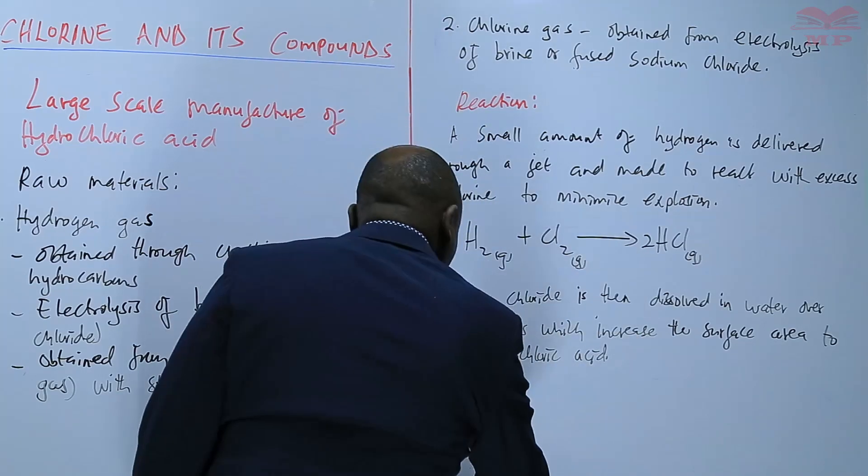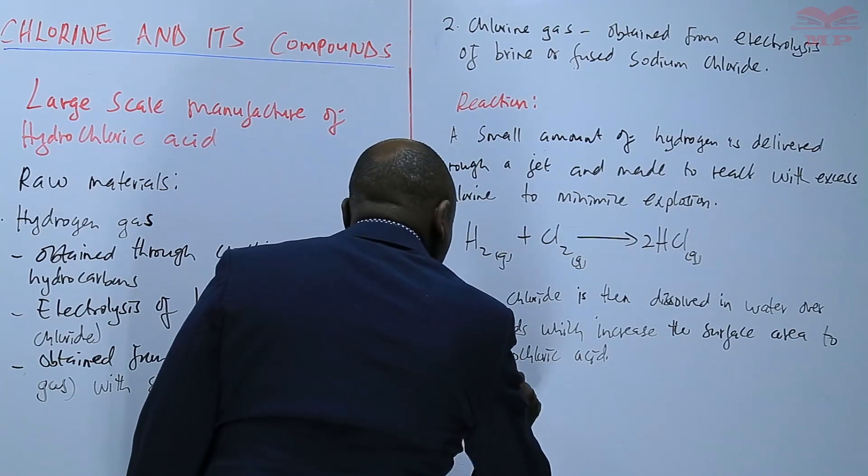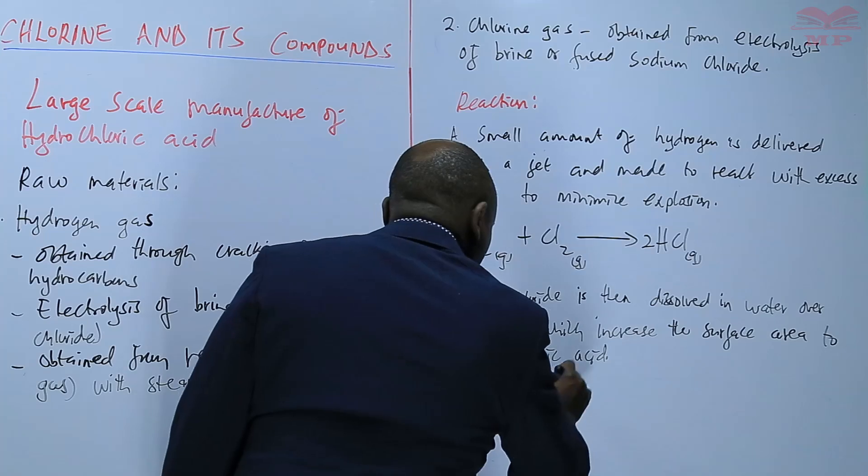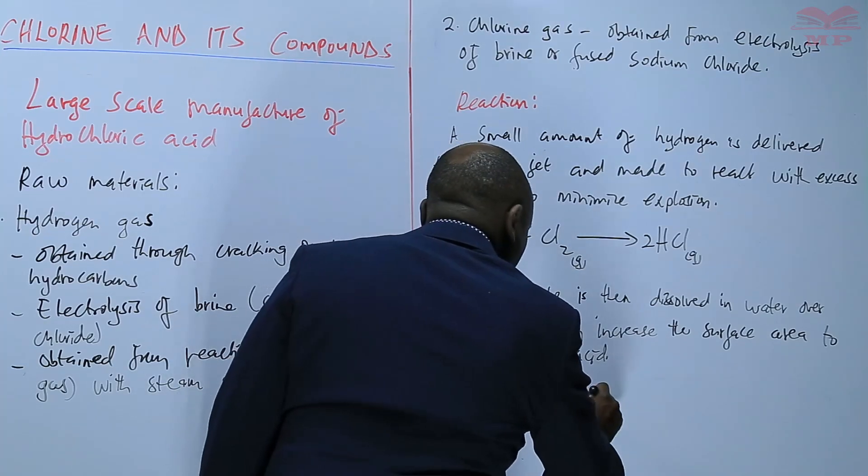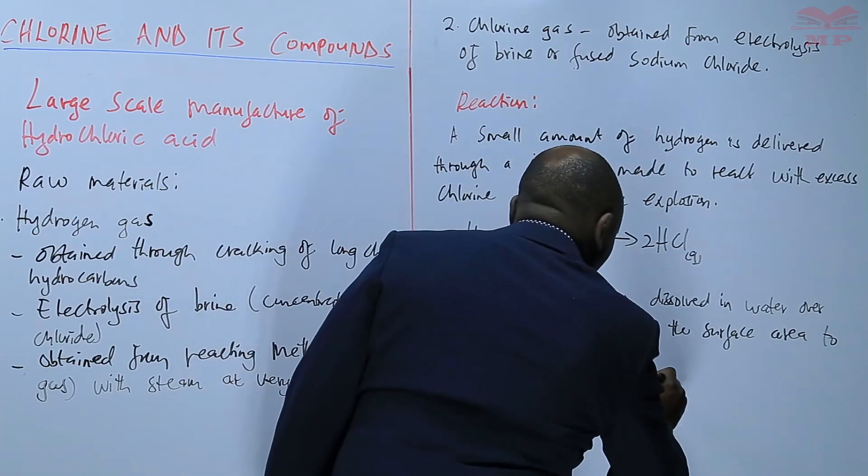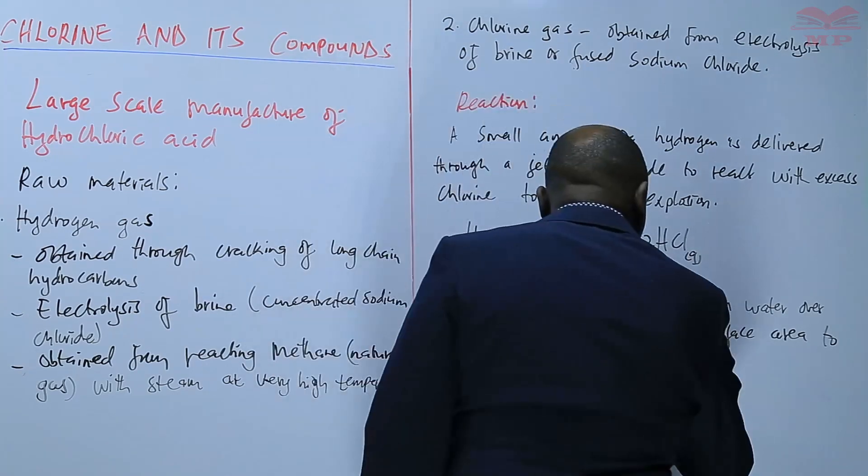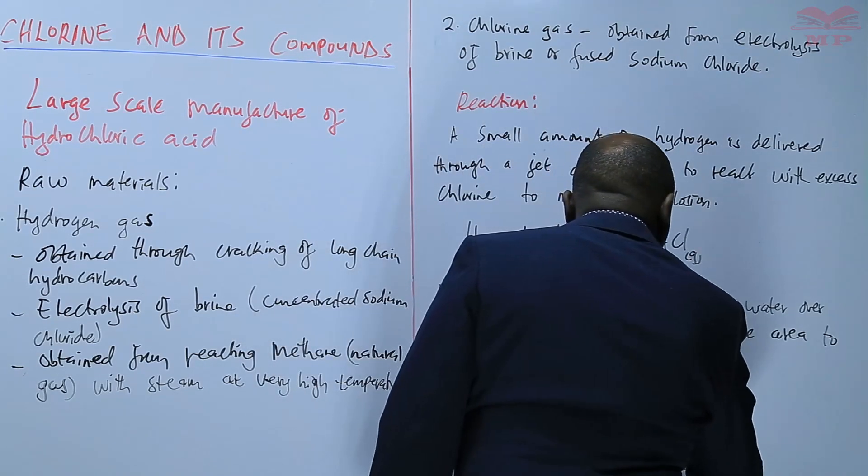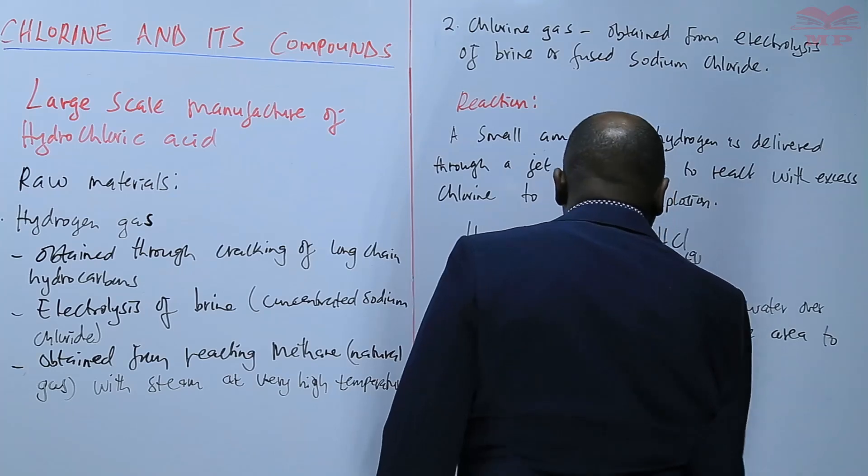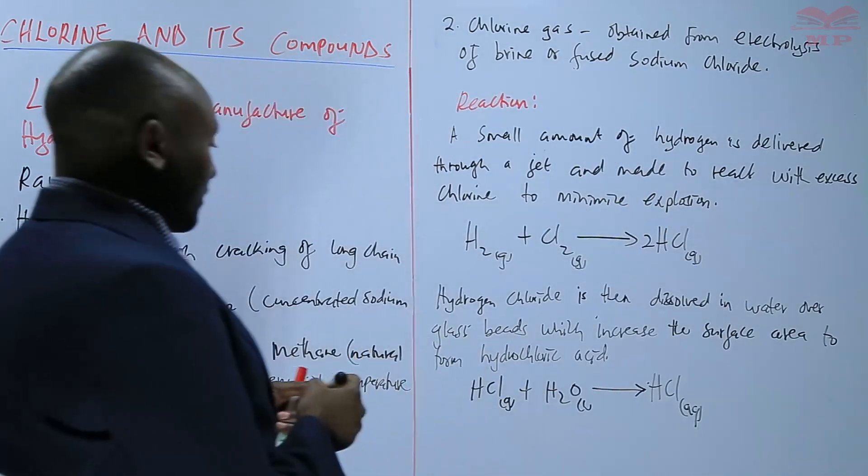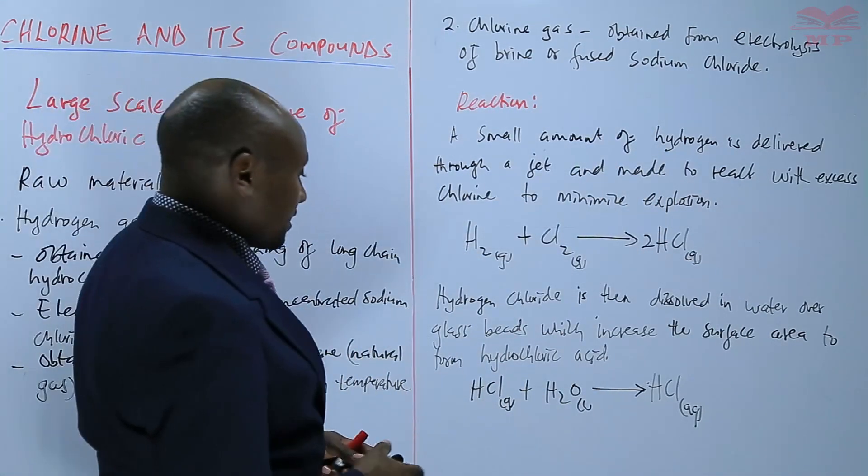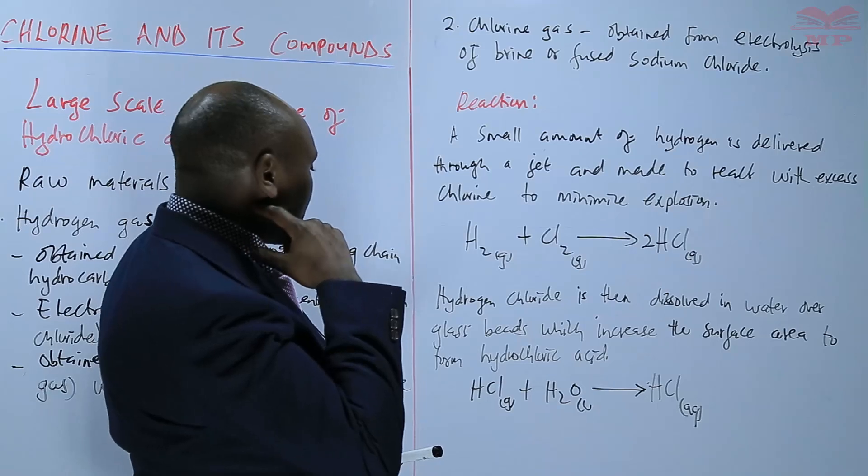So this HCl gas is dissolved in water, and on this we get HCl solution, which is now hydrochloric acid. So that is the equation that takes place.